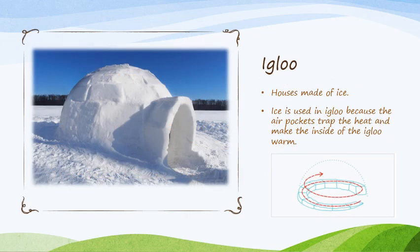Now, children, this type of house is named an igloo. It is made up of ice. Ice is used in igloos because the air pockets trap heat and make the inside of the igloo warm. All the cold air from inside runs downwards and collects at the bottom, so the upper portion remains warm. So igloos are warm from inside.